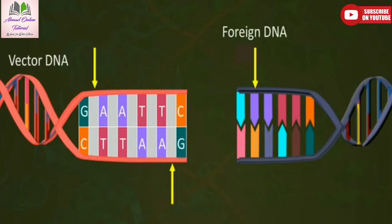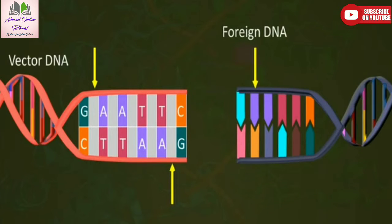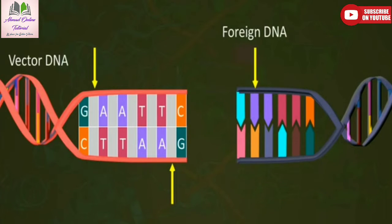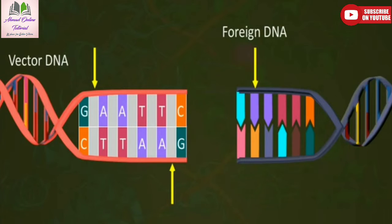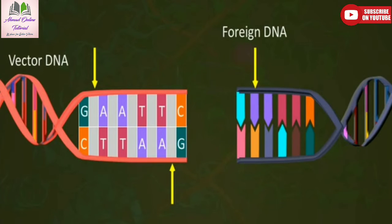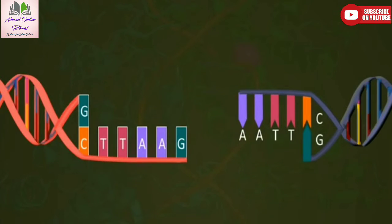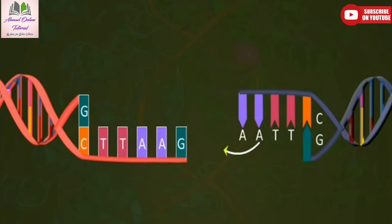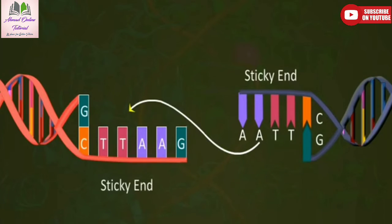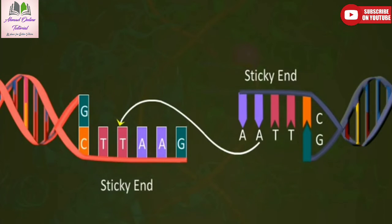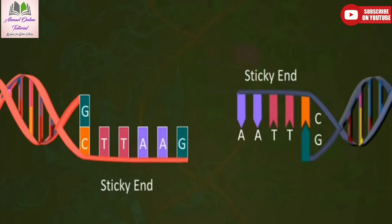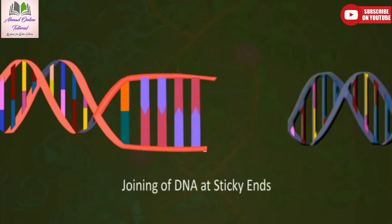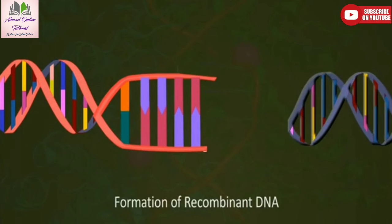If we take a vector DNA and a foreign DNA with palindromic sequences recognized by ECO-R1, then ECO-R1 cleaves DNA and generates ends called sticky ends. These ends have the ability to readily pair with each other by the action of DNA ligase. Thus, a recombinant DNA is formed.